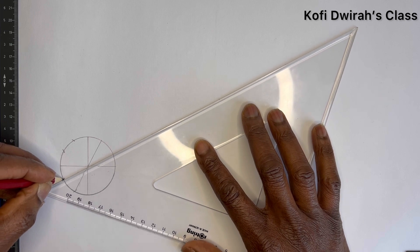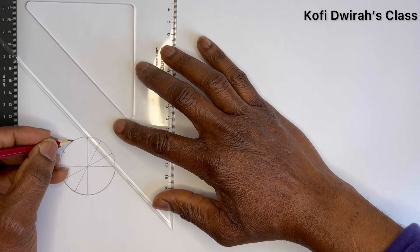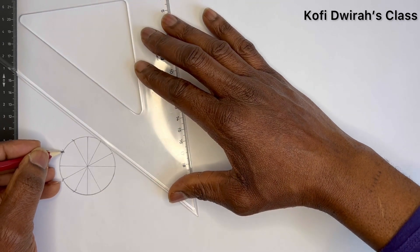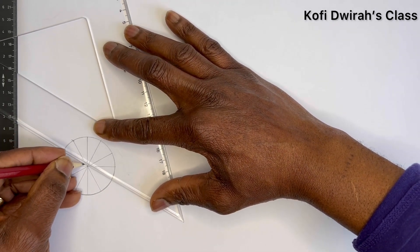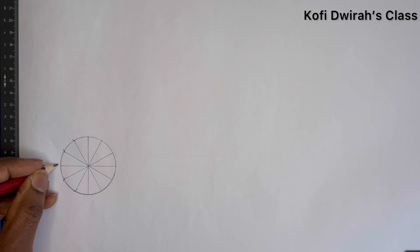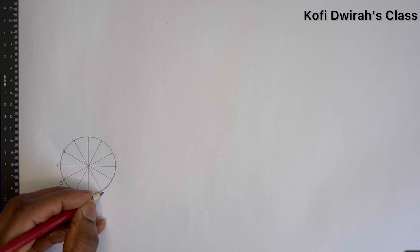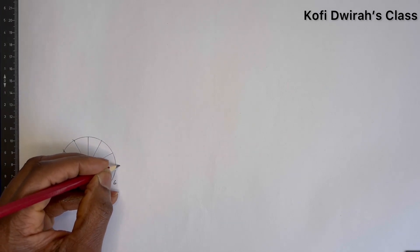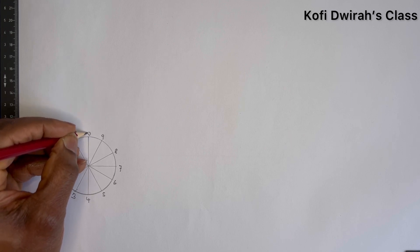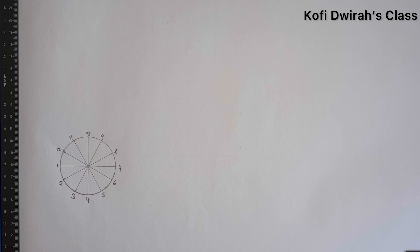Through the center here as well, through the center, and the last through the center. So you have this. Then you number it: we have one here, then two, three, four, five, six, seven, eight, nine, ten, eleven, and twelve.